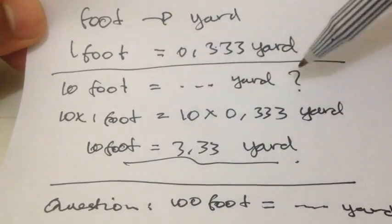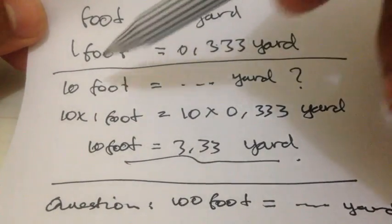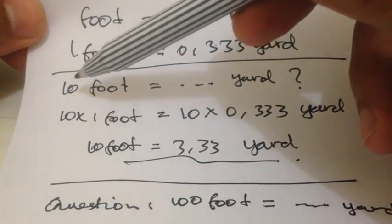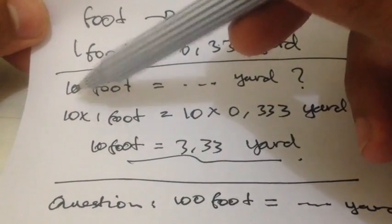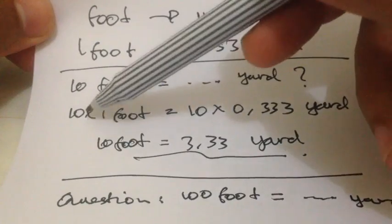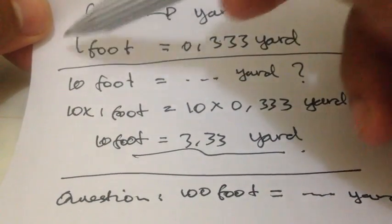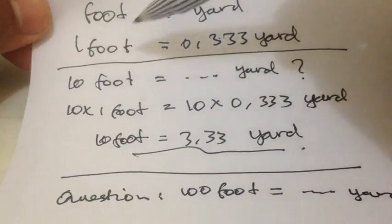I have a question: 10 foot, how to convert into yard? Right. So I'll solve this problem by putting this 10 here, and then we multiply the 10 with one foot, which we have from this formula.